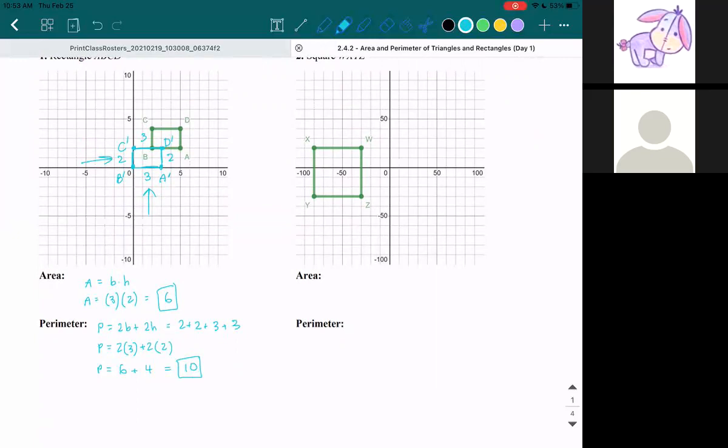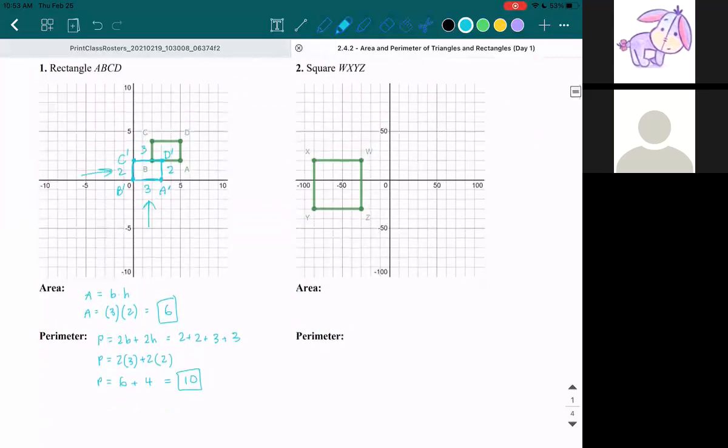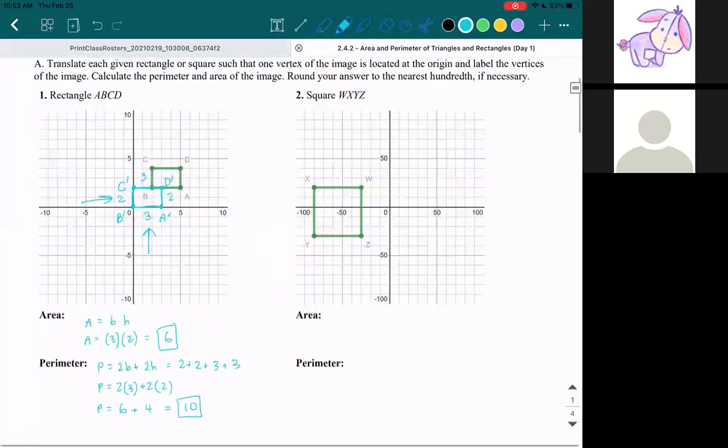So I want you to try number two on your own. And then we will see how you did. And just so that we can make sure we're all doing it the same way, you can move W to the origin just because it's the closest. So move every single point down two and three to the right.